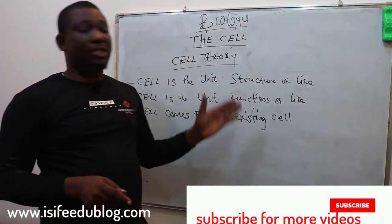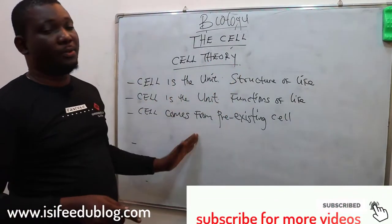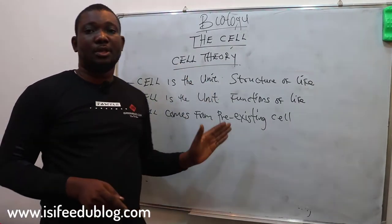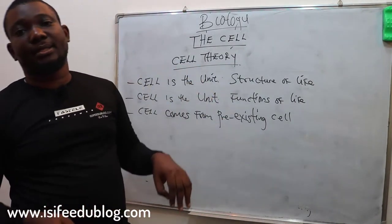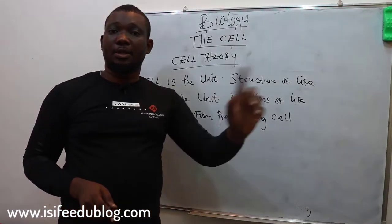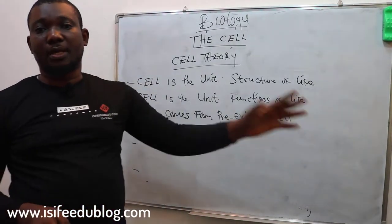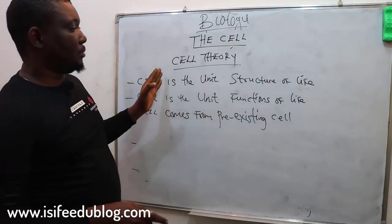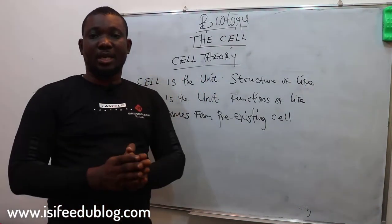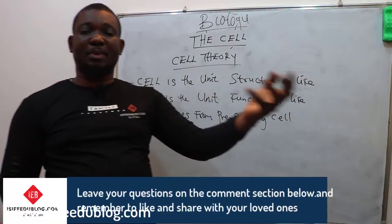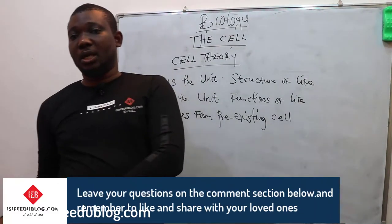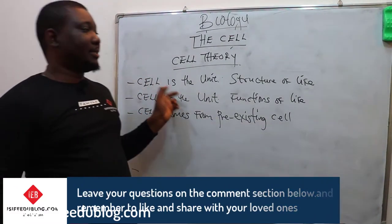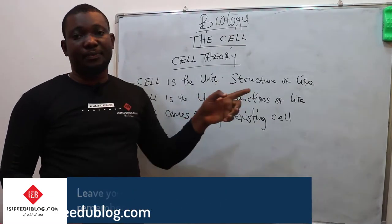The development of cell theory — you can see the three cell theories. The development of these three cell theories was that of Matthias Schleiden and Theodor Schwann. The cell theories were formulated based on these two scientists: one was a botanist, that is Matthias, and the other a zoologist, that is Theodor. They say that the cell is the unit structure of life.